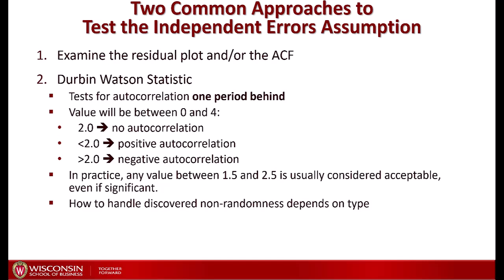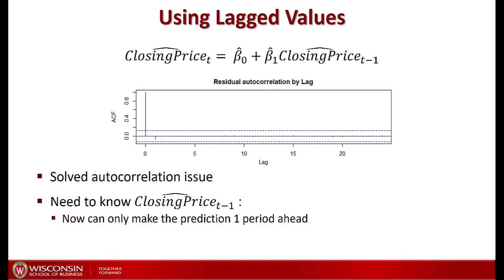How you handle non-randomness in the residuals — that is, the autocorrelation — depends on its type: positive, negative, or occurring at a specific lag such as seven periods ago. For the Twitter stock example, running a regression of the closing price on the closing price one period before almost completely eliminated the autocorrelation. However, this means to make a prediction you now need to know the closing price from the previous period, making long-horizon forecasting impractical.